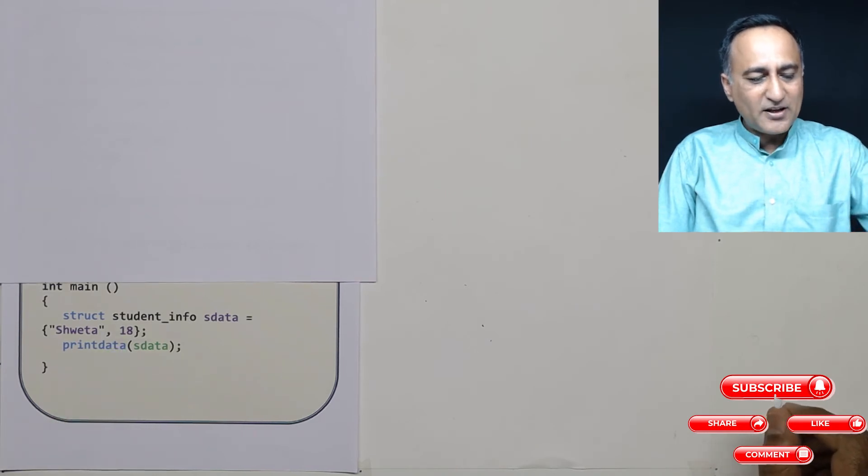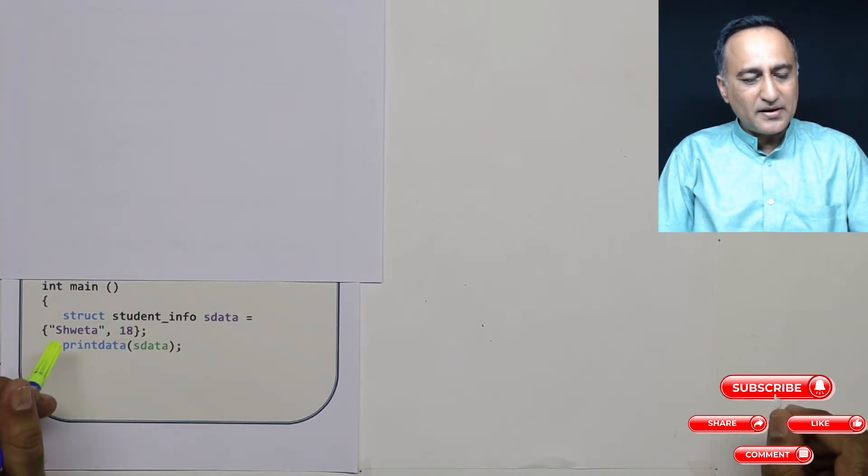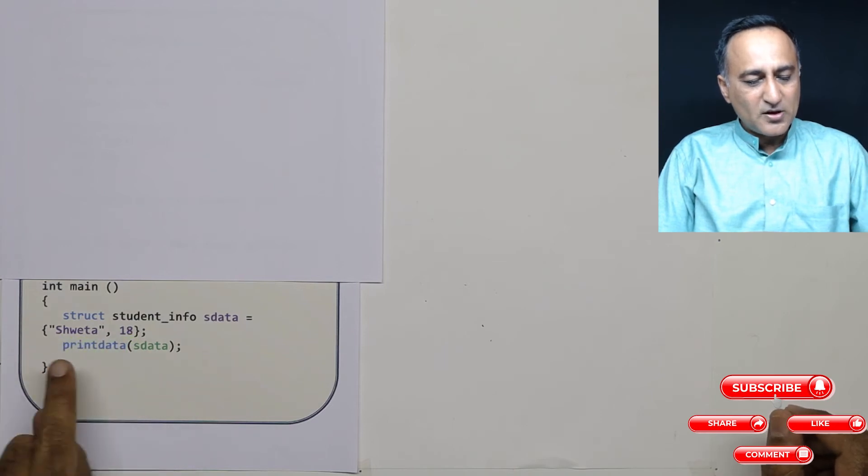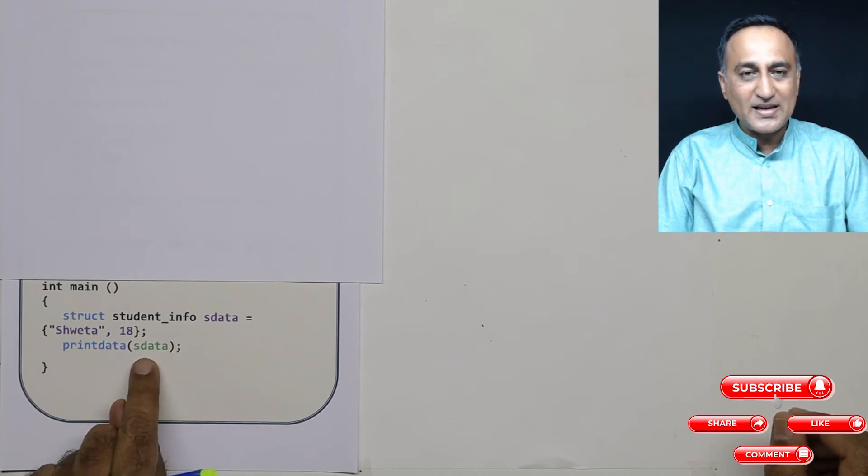Let's say I have written a function where I want to print the name and age. The function name is print_data, and I am sending the name of this structure called sdata to print_data.